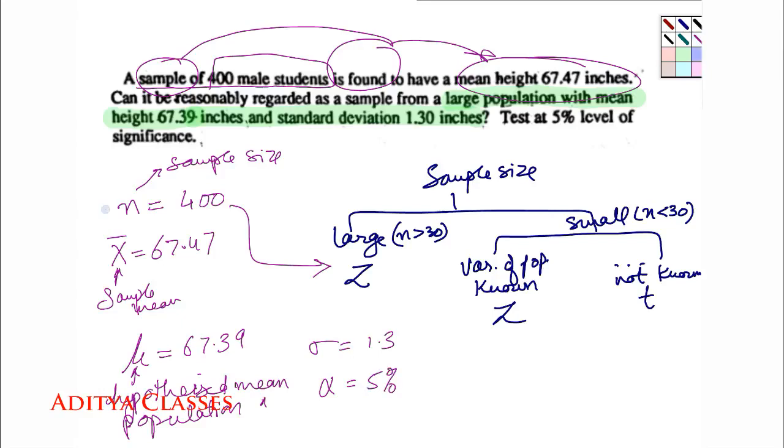Now let me mark certain things. N equals 400, x bar equals 67.47, mu equals 67.39, standard deviation 1.3, alpha 5 percent, and test is Z.